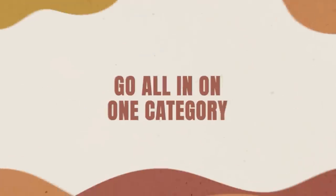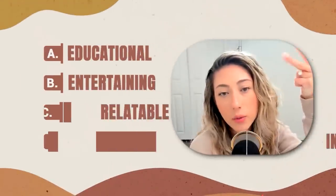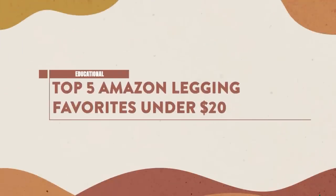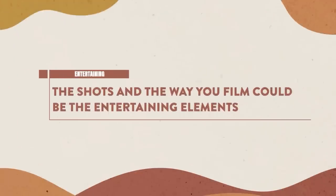Let's say it's fashion, and then deliver that content in multiple ways using different value pillars: educational, entertaining, relatable, and inspirational. So how can you talk about fashion in those four ways? You have some good educational fashion — it's like 'this is ways to style this blazer.' You could also educate with something like 'top five Amazon legging favorites under $20.' You could do entertaining videos where you're just styling an outfit — your shots, the way you film, the close-ups and far shots — those are the entertaining elements. Maybe it's your location that keeps it engaging.